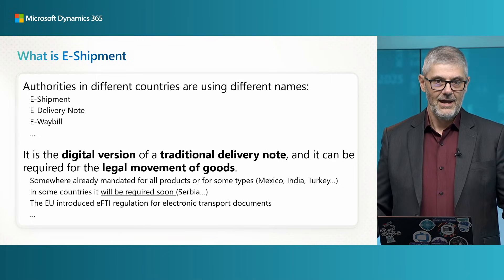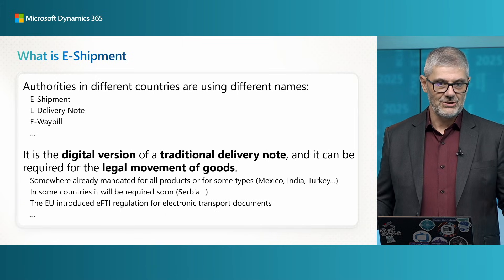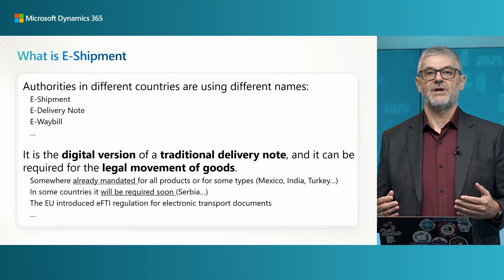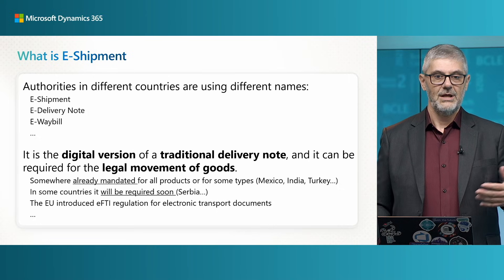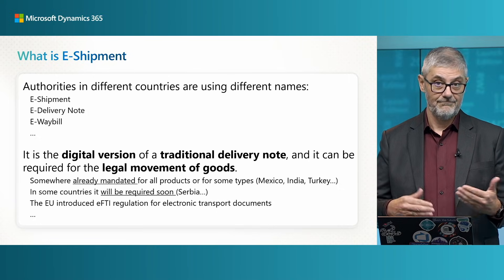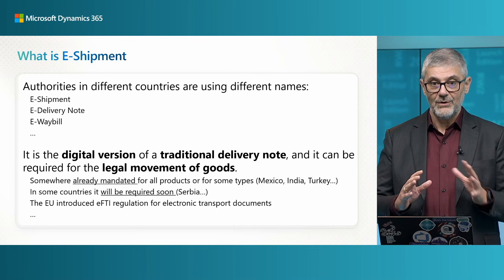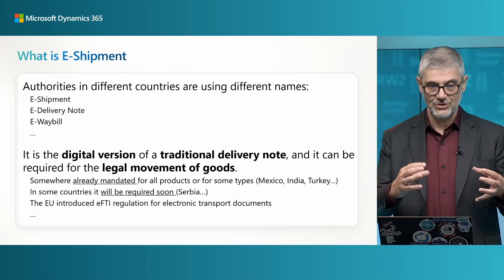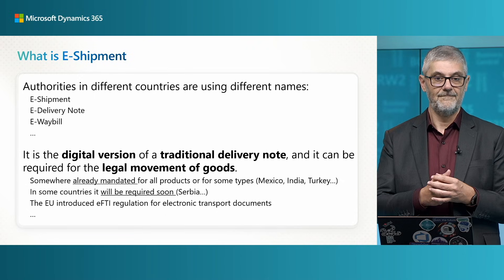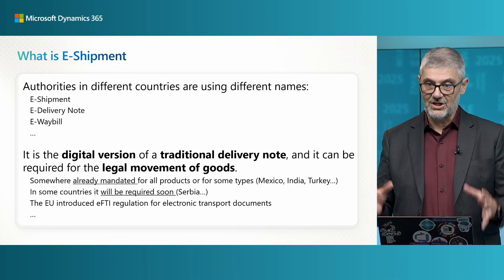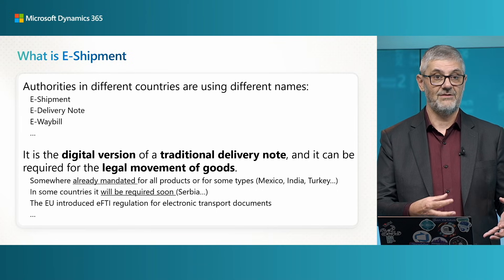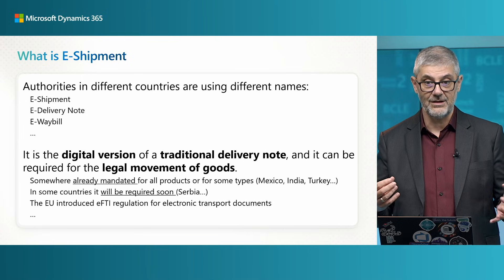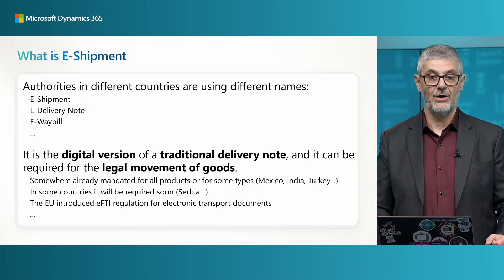Let's see first what is eShipment and what does it do. We use this expression, but authorities in different countries can use different expressions and different names — eShipment, eDelivery note, eWaybill, or other expressions. All of them are actually the same. This is your shipment in Business Central in an electronic file — the digital version of delivery notes or shipments we already had in the system and in almost all ERP systems.